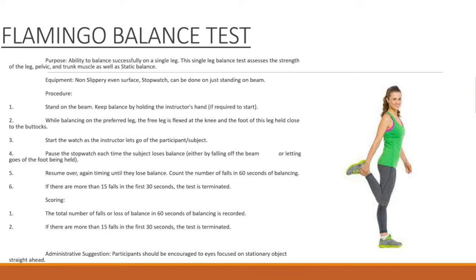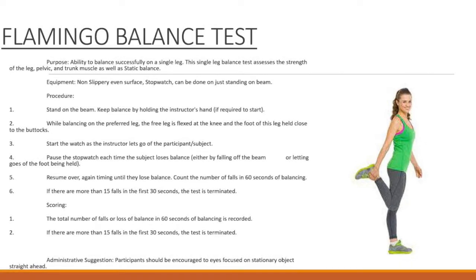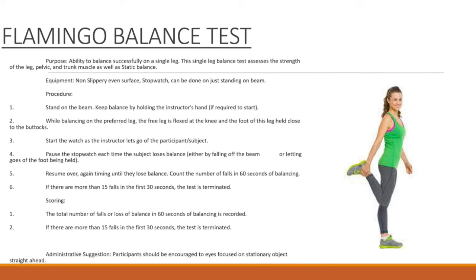Scoring: The total number of falls or loss of balance in 60 seconds of balancing is recorded. If there are more than 15 falls in the first 30 seconds, the test is terminated. Administrative suggestion: Participants should be encouraged to keep eyes focused on stationary objects straight ahead.